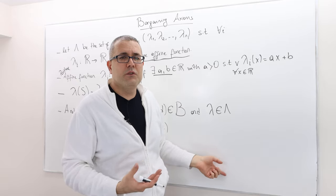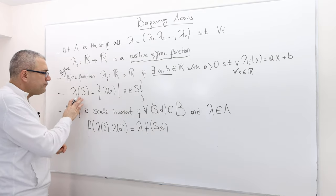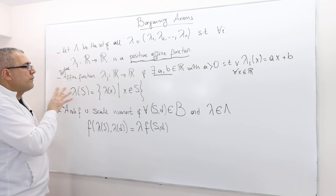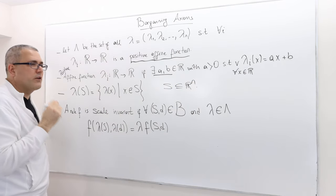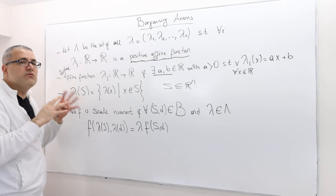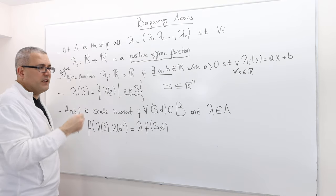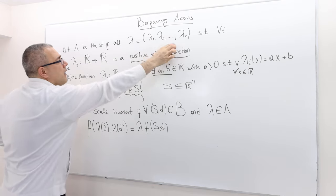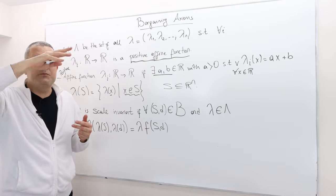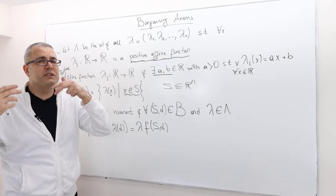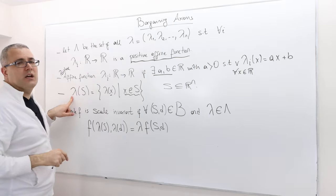Remember the affine transformation of the utility function? Here, I am going to be taking the affine transformation of the set of feasible payoffs. For any set S which is a subset of ℝⁿ — so it's a feasible set of payoffs — λS is the rescaling of this set S. We take each vector x in this set, plug it into our function λ, and generate the scaled set. We can scale up some players' payoffs, scale down others, or scale all up or all down.